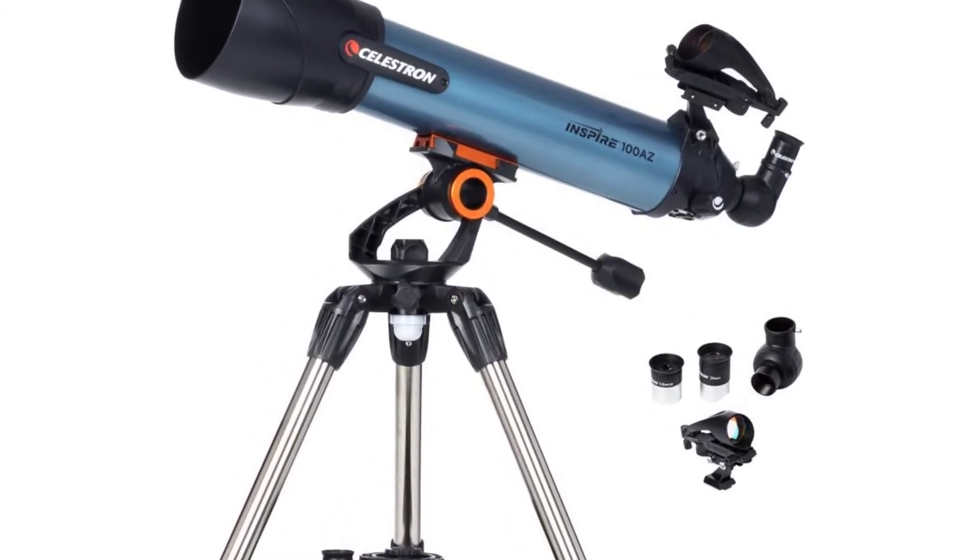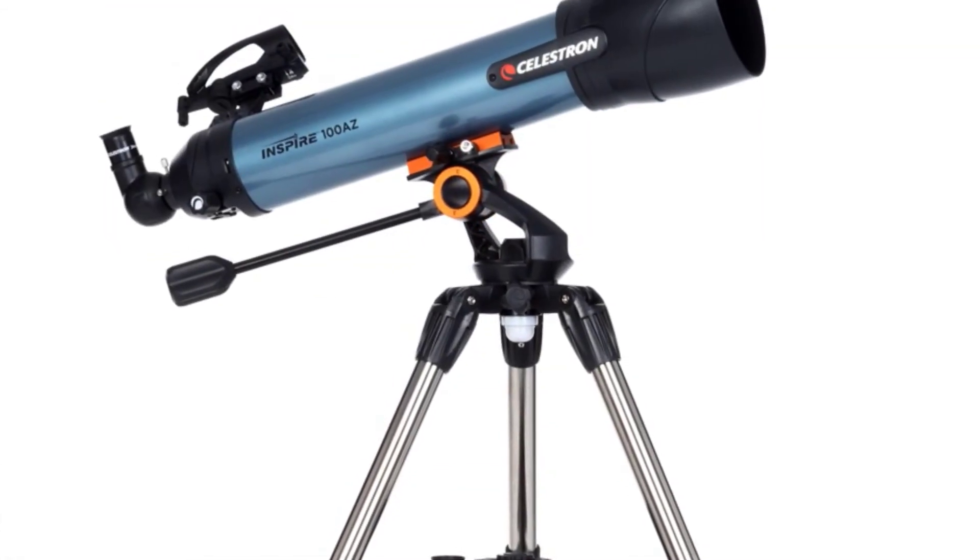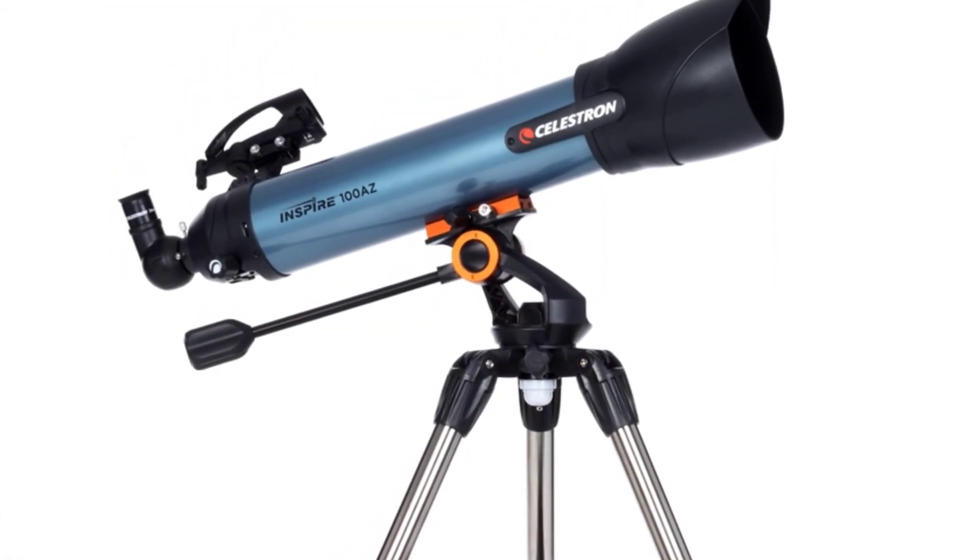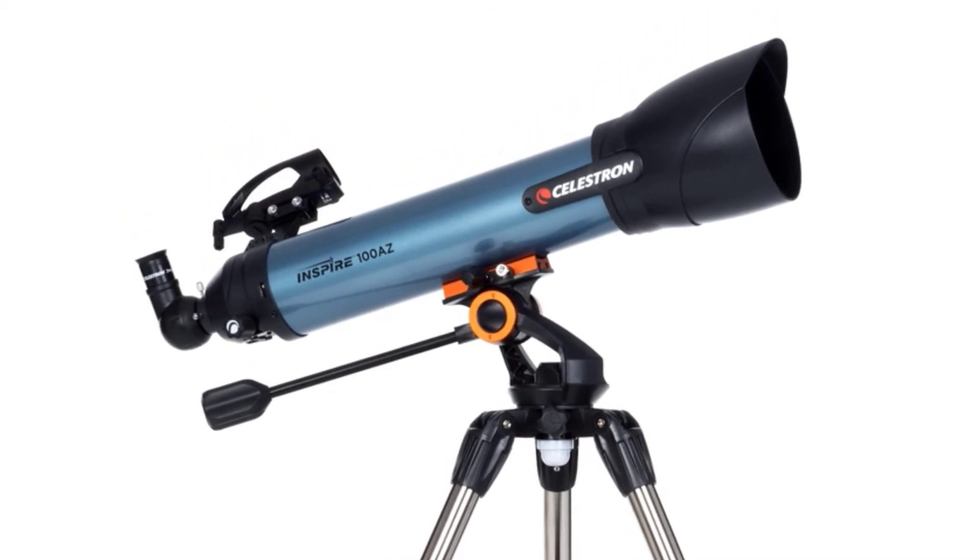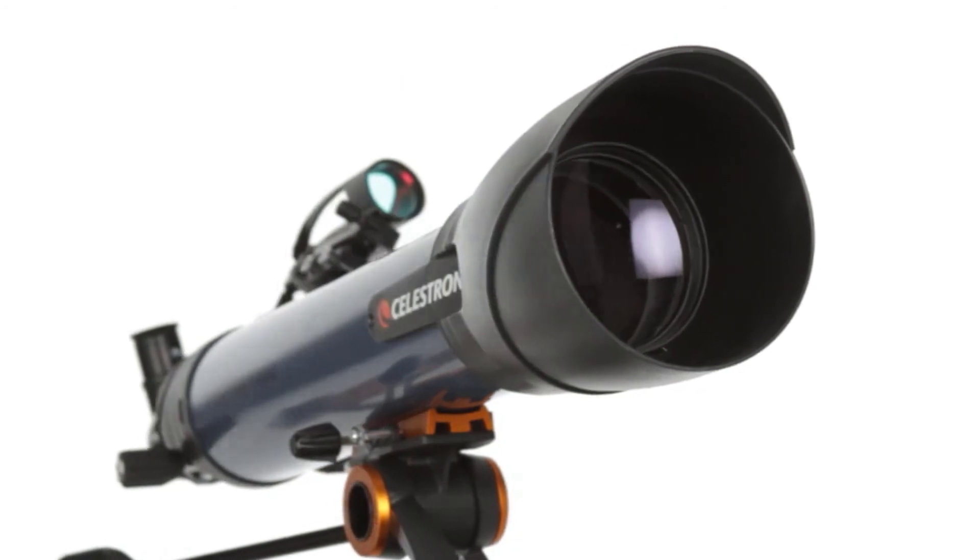One unique feature this telescope has is the lens cap, which has an integrated smartphone adapter built right into it. You can put your phone on the rubberized friction surface, so it is positioned to view through the imaging point, then secure it with the included bungee cords.